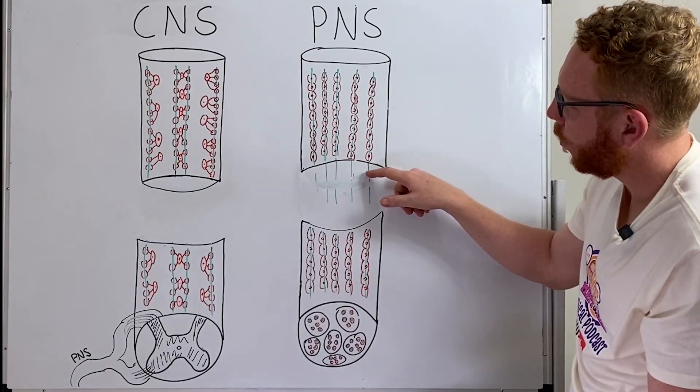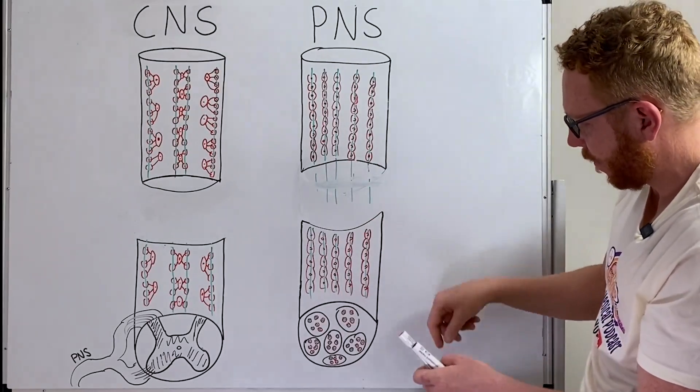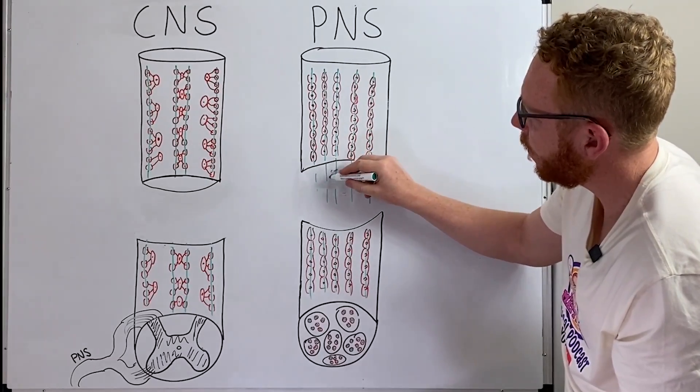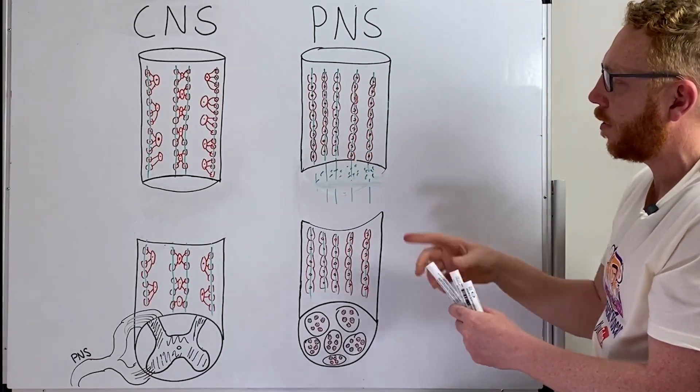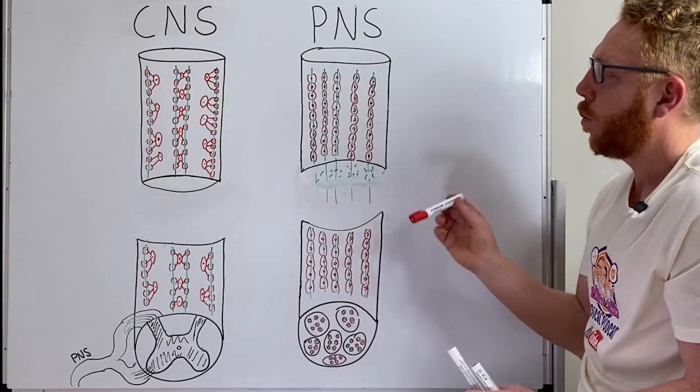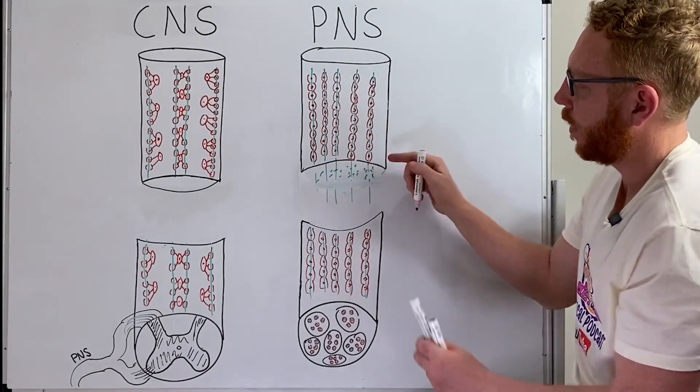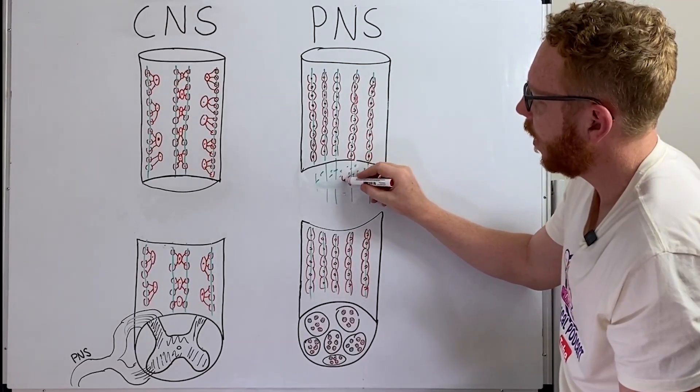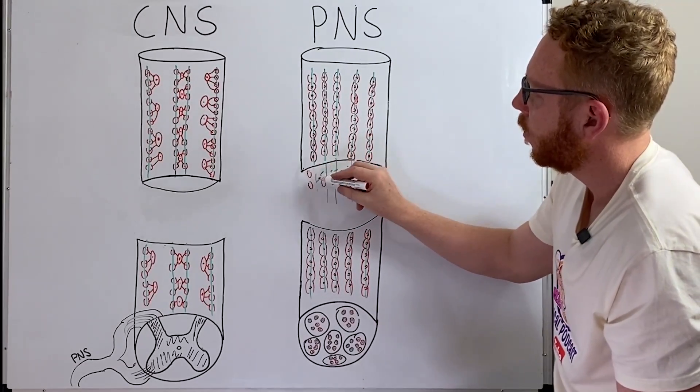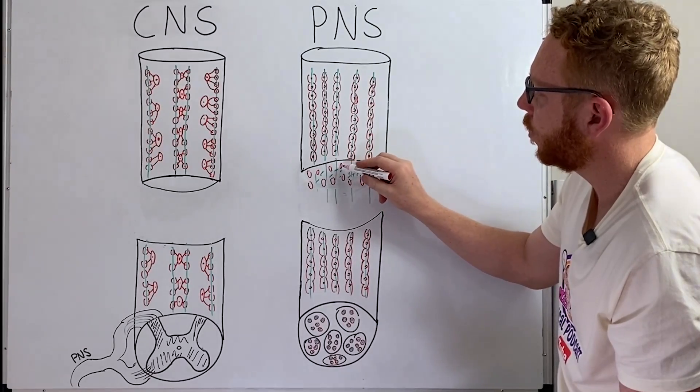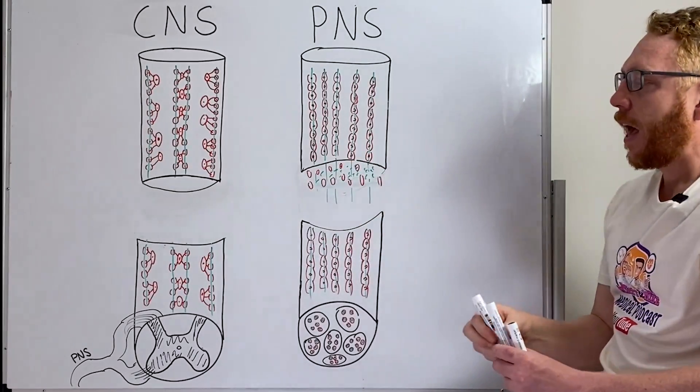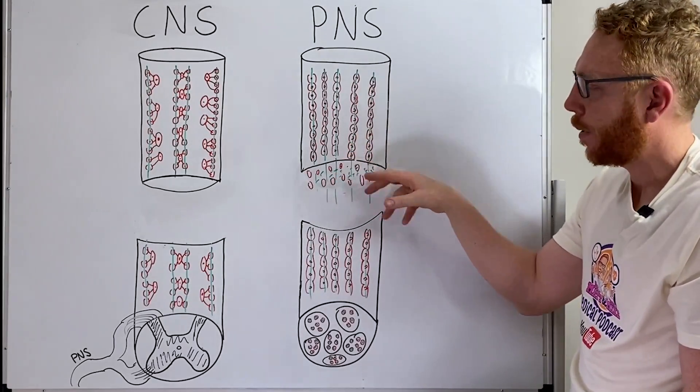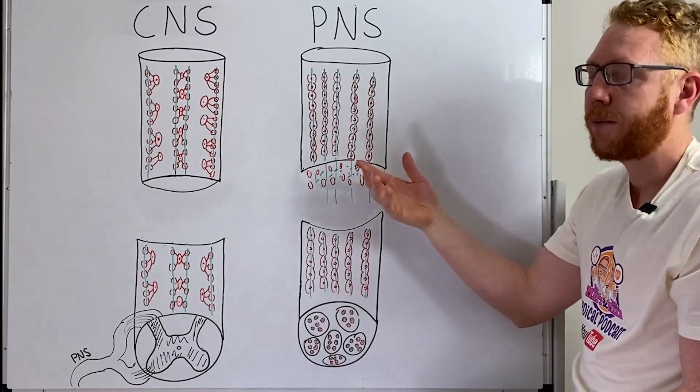So the axons will break back so now we have all these fragments of axons in the area. Now the Schwann cell that was once there will detach off, they will break off and they will start to accumulate around the debris. So this is a very important step. What these Schwann cells will do is they will start cleaning up that debris because there's a lot of damaged tissue in that space.